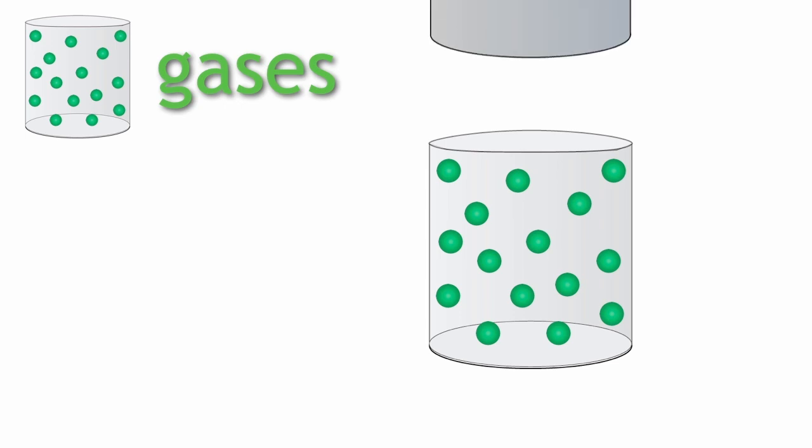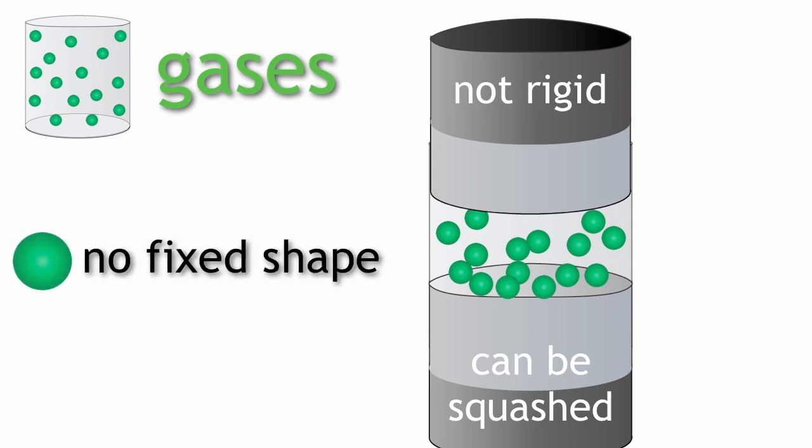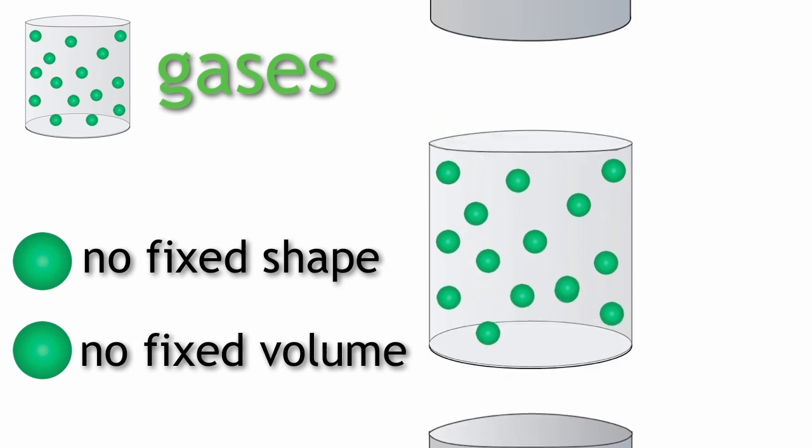As a result, gases are not rigid and can be squashed or compressed. They do not have a fixed shape nor fixed volume. They fill the whole space they are in.